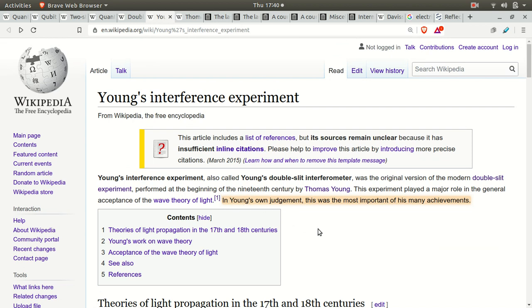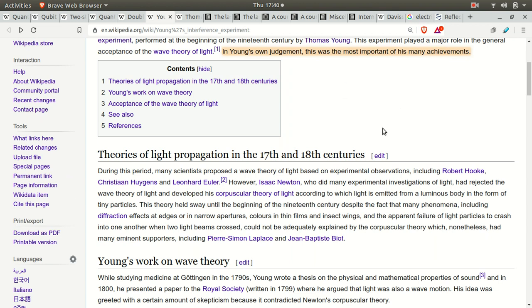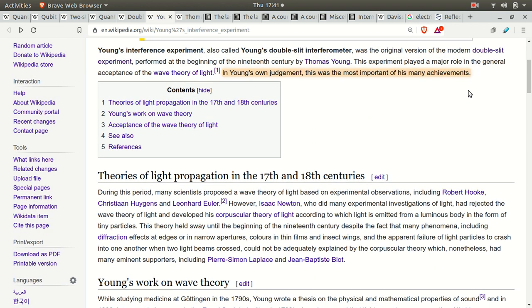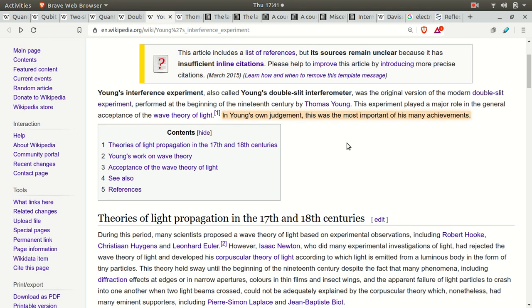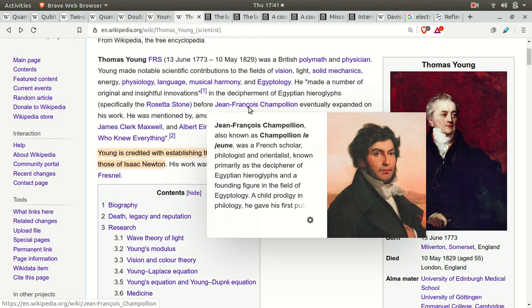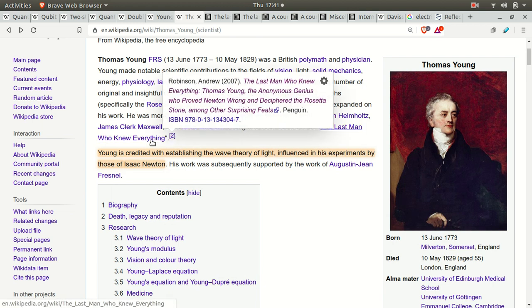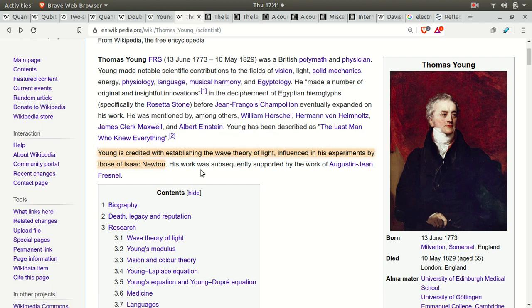One thing, Thomas Young's own judgment, this was the most important of his many achievements. This is propaganda BS. We're going to go through the sources of his work, his own writings, and I'm going to show you that he only talks about this experiment in like two sentences in his entire career. And this is the guy that they name drop here. James Clerk Maxwell, Albert Einstein, the last man that knew everything. Young is credited with establishing the wave theory of light influenced by the works of Isaac Newton. The last man who knew everything. Let's take a look at that book.